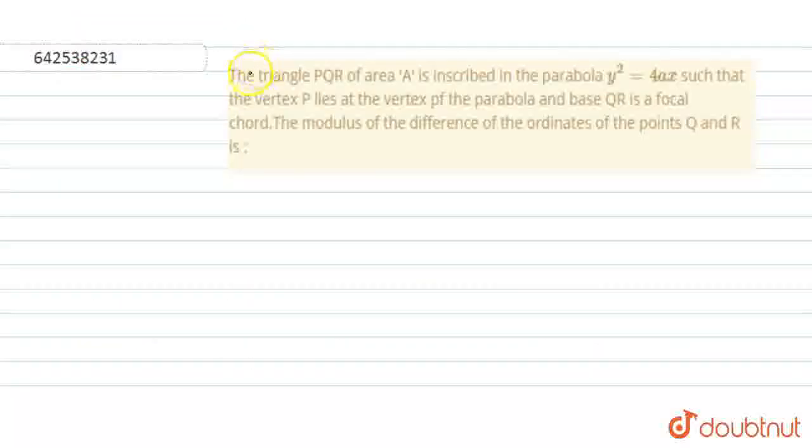Hello everyone, look at the question. The triangle PQR of area A is inscribed in a parabola Y² equals 4ax, such that vertex P lies at the vertex of the parabola and base QR is a focal chord. Find the value of modulus of the difference of the ordinates of the points Q and R.